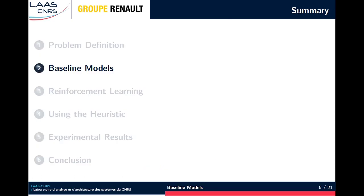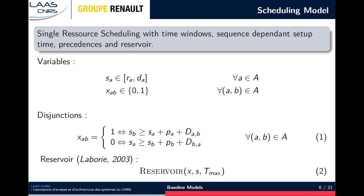We can see this problem as a single resource scheduling problem with sequence-dependent setup time, time windows, precedences, and with a reservoir constraint which is filled by pickups and emptied by deliveries. For each task, we define a variable as its starting date, and we also have for each pair of tasks a boolean variable standing for their relative order. We don't need this variable for all pairs of tasks because of the precedences. We then link those two sets of variables with constraint 1. The second constraint is for the reservoir resource. We used an algorithm from a paper by Philip Labori to propagate on starting dates from the boolean variables and from the precedences.